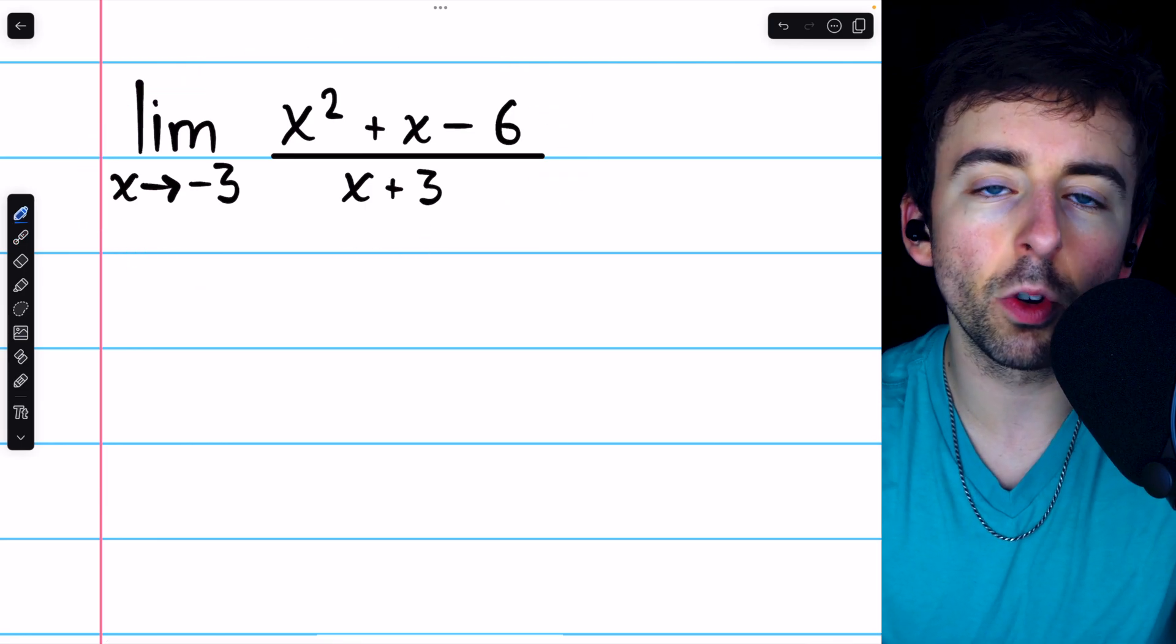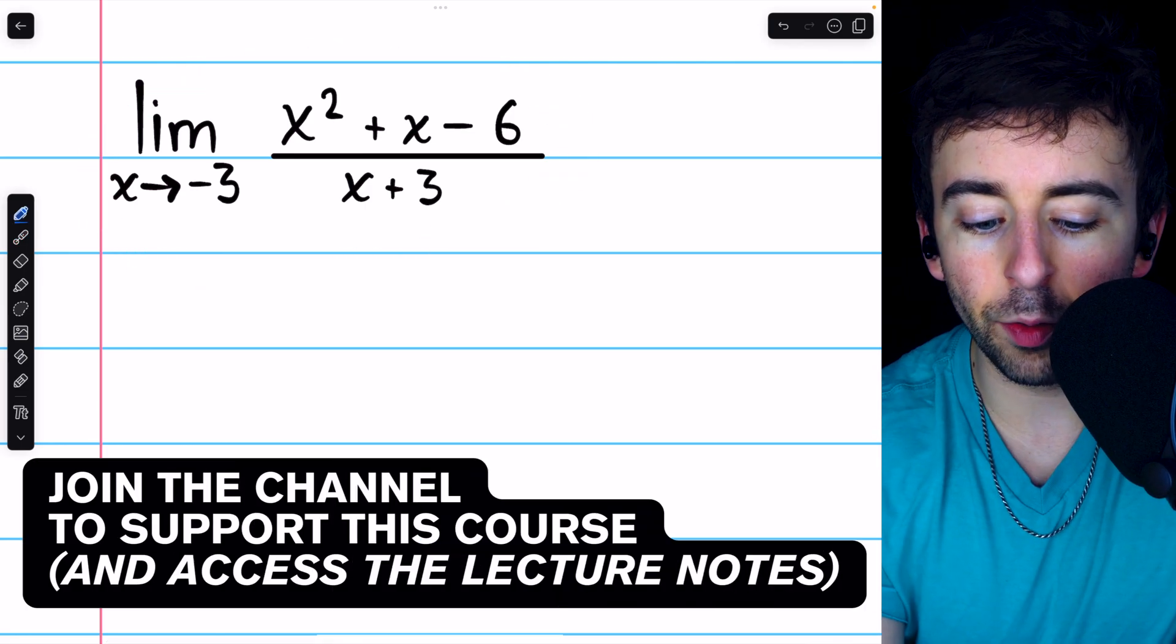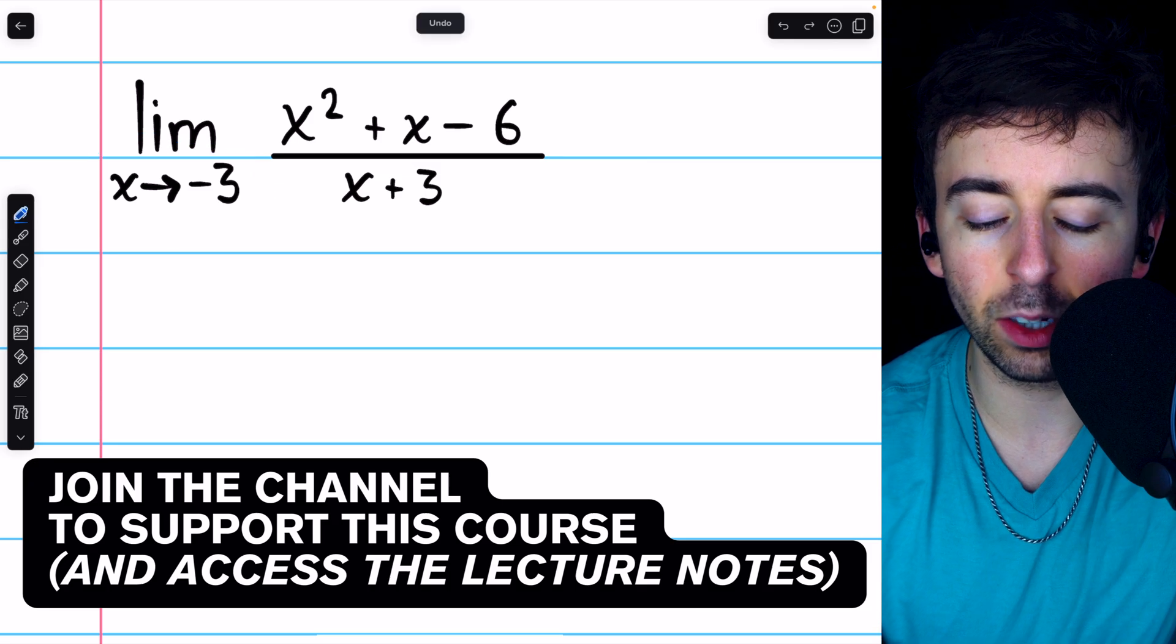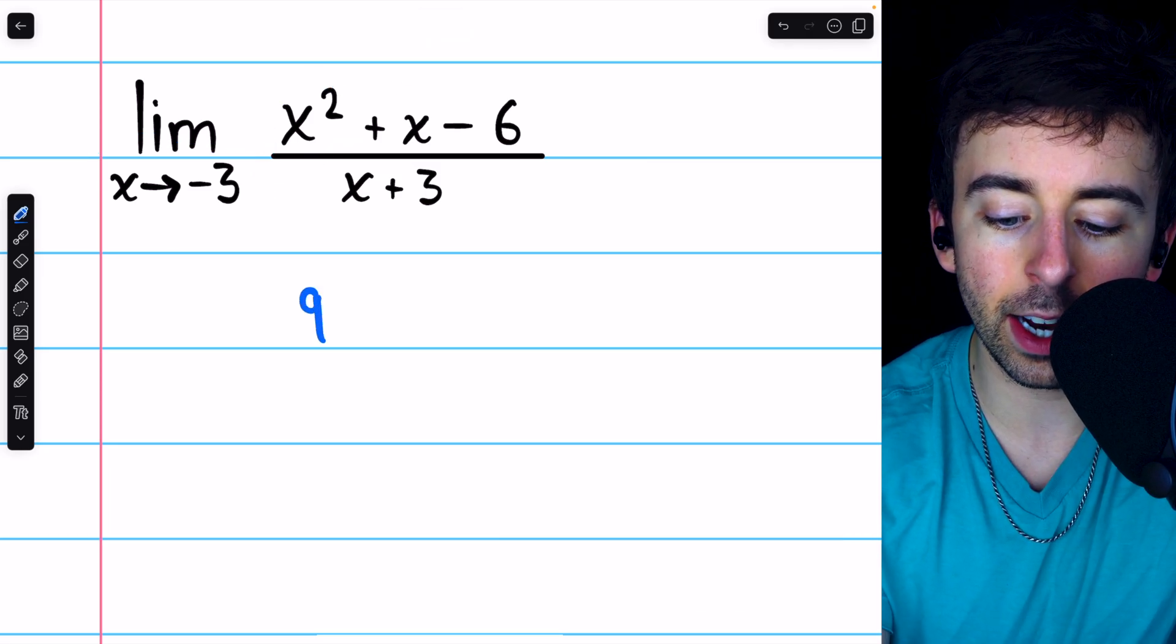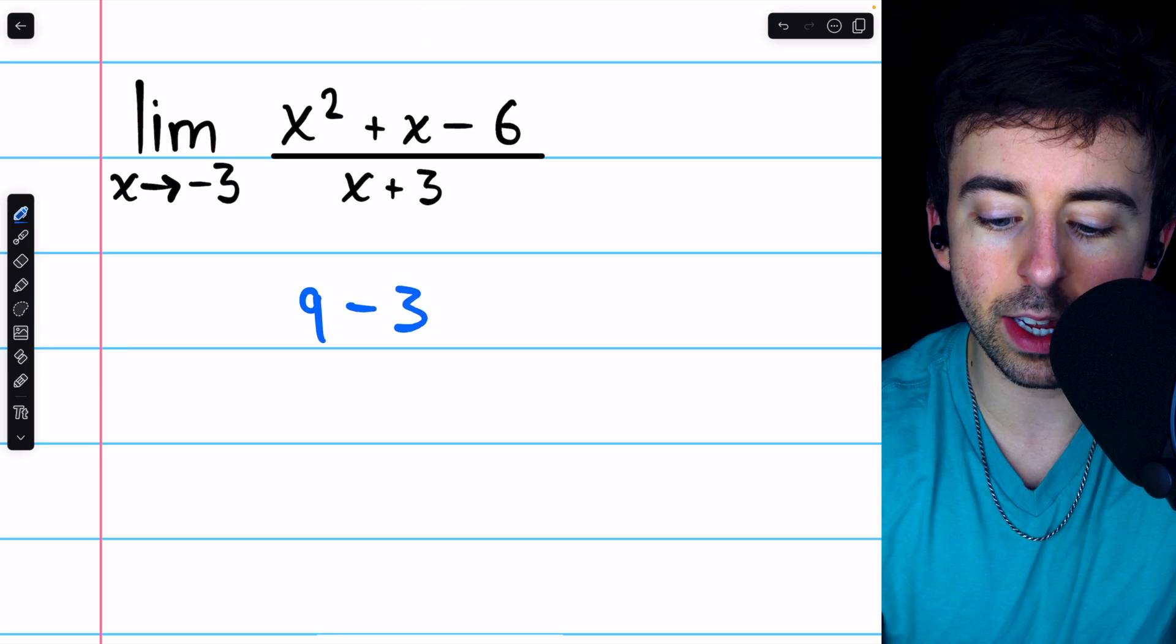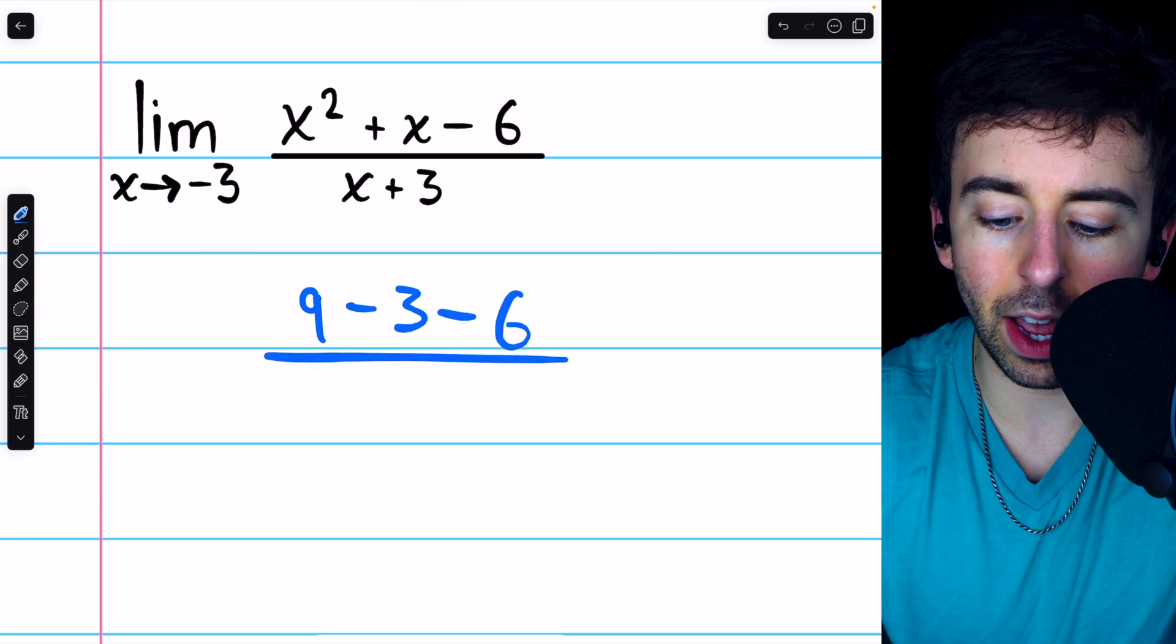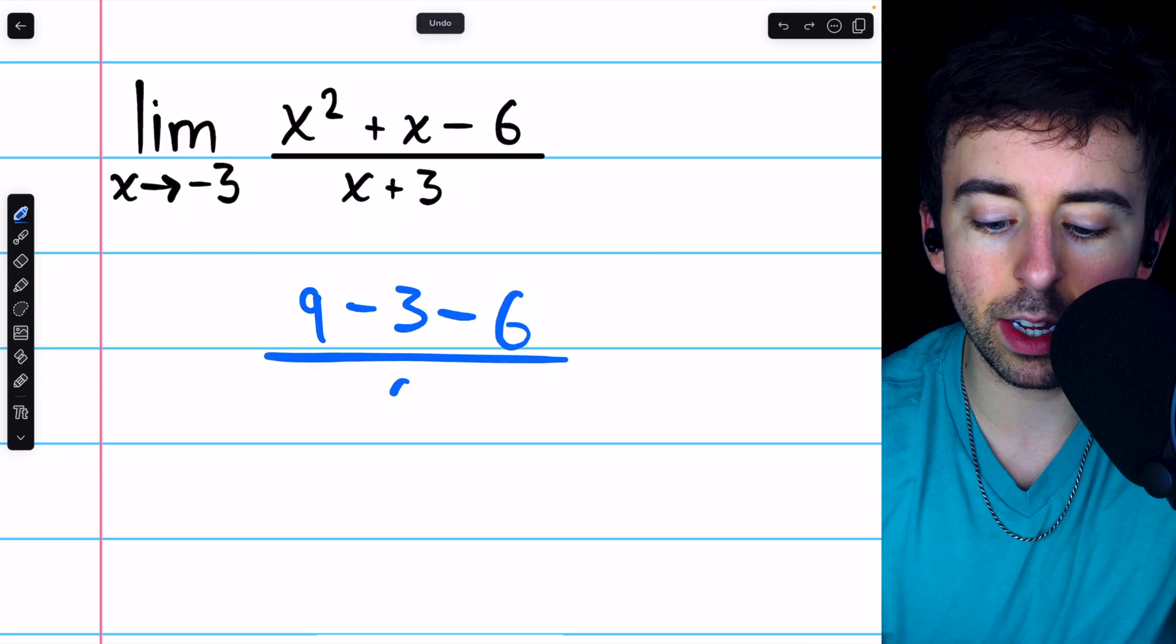We can't evaluate this limit directly by substitution. If we were to try plugging in x equals negative 3, we would get negative 3 squared, which is 9, plus negative 3, minus 6, divided by negative 3 plus 3, that's 0.